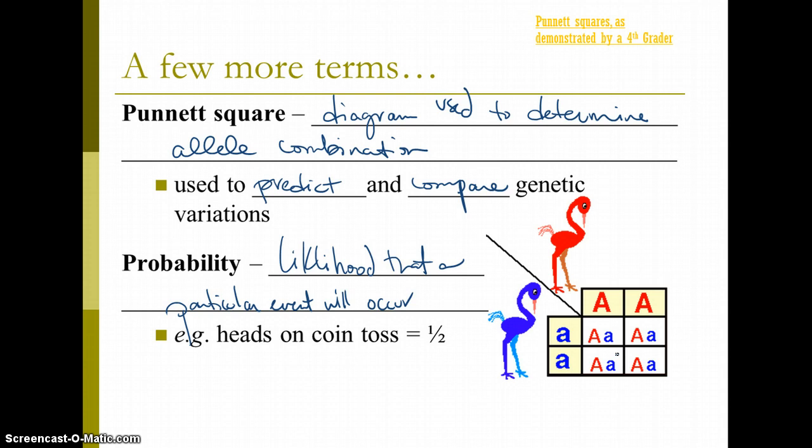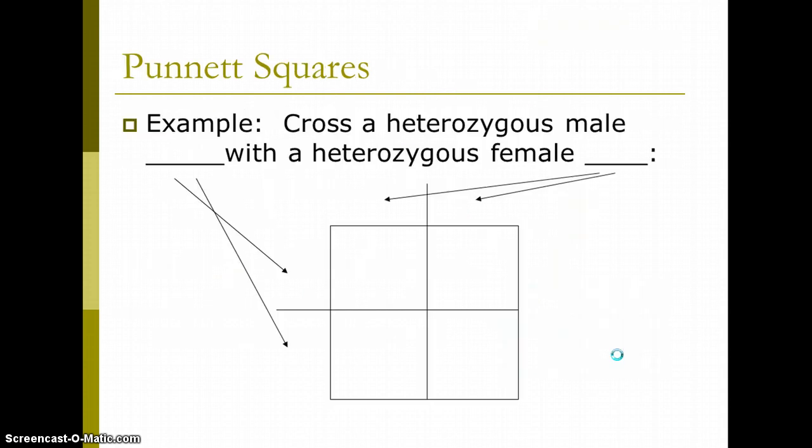So, that being said, let's do a practice problem. So, we're going to cross a heterozygous male with a heterozygous female. Now,